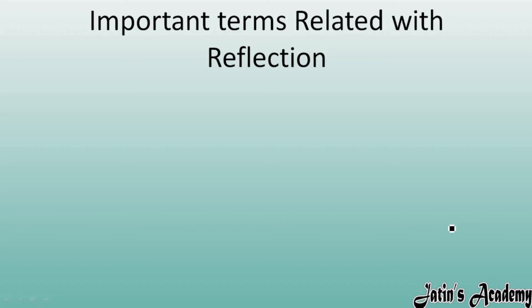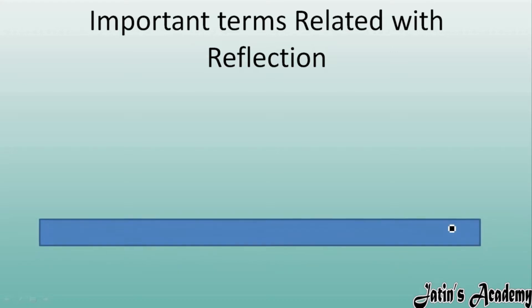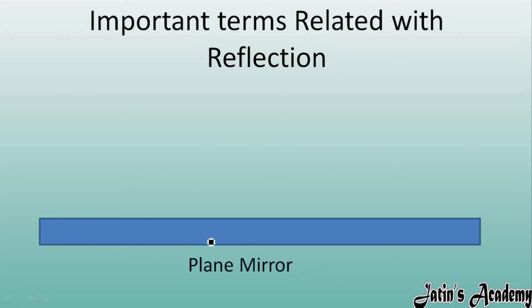Let's look at important terms related to reflection. For each reflection, we need a mirror or a surface — either regular, diffused, or irregular. Here, for the reflection of light, I am using a plane mirror.